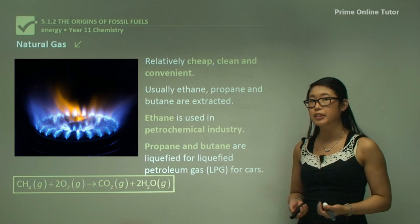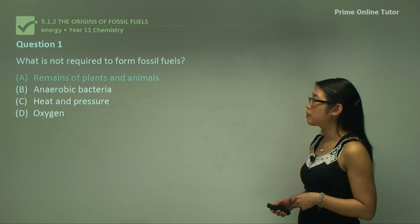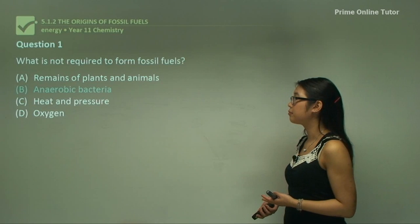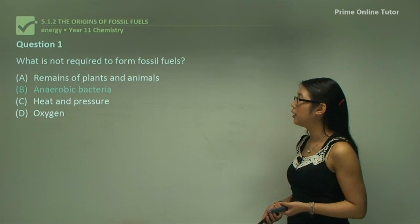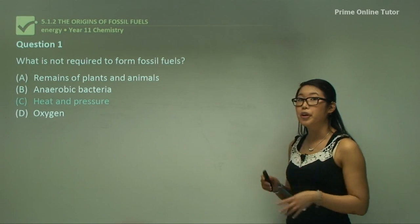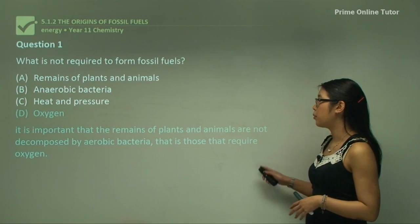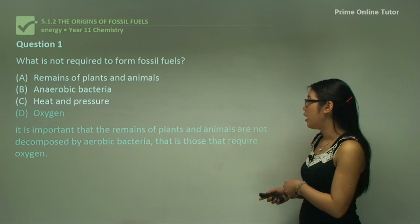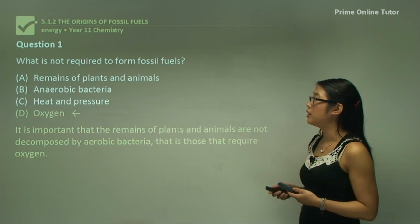Using the information we'll answer a few questions. Question one: what is not required to form fossil fuels? Remains of plants and animals? Yes, they are required because that's the source of fossil fuels. Anaerobic bacteria? Yes, they need to decompose the plants and animals without oxygen. Heat and pressure? We also need that to squeeze everything together, heat it up and convert everything into hydrocarbons. And oxygen? No, we don't need oxygen because it's important that the plants and animals are not decomposed by aerobic bacteria. So D is the correct answer.